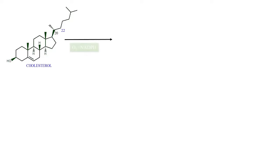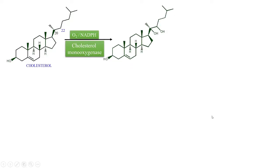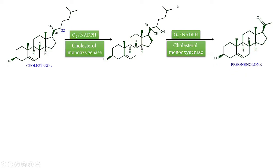Cholesterol, in the presence of cofactors like oxygen and NADPH and the enzyme cholesterol monooxygenase, is converted to 20,22-dihydroxycholesterol — meaning there are hydroxyl groups at positions 20 and 22. Again, in the presence of the same cofactors and enzyme, this 20,22-dihydroxy compound is converted to pregnenolone, where the side chain is cleaved off.